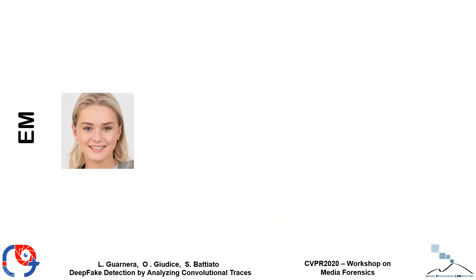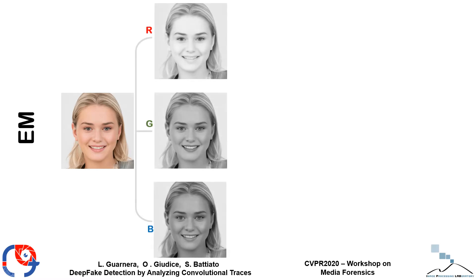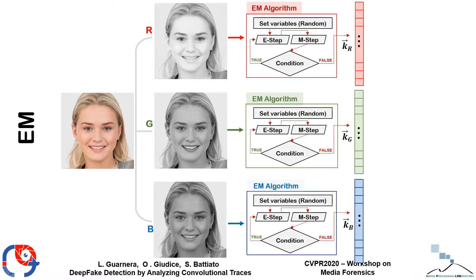We start from the input image, separate it into the three color channels RGB, and separately apply the EM algorithm in order to reconstruct the distribution of probability for pixels related to a specific image generation process. To do this, we exploit pixel spatial correlations inside a specific kernel dimension. The parameters found by the EM algorithm are the features for each color channel, which are concatenated into the final feature vector. Further details of these techniques are reported in our paper.